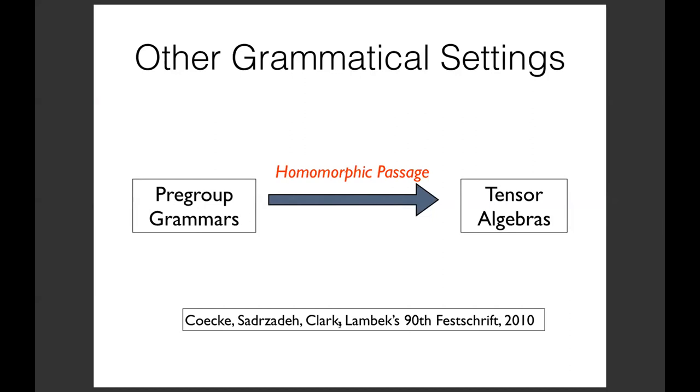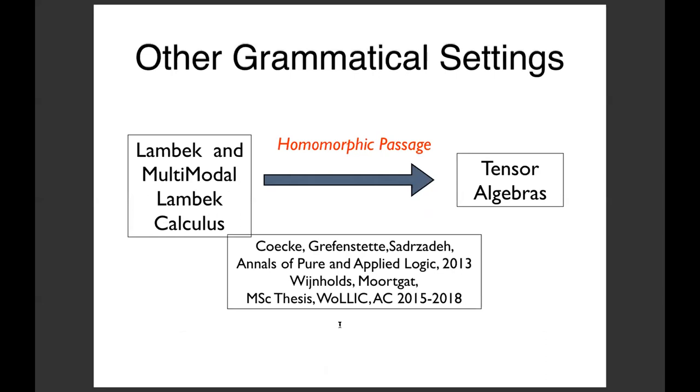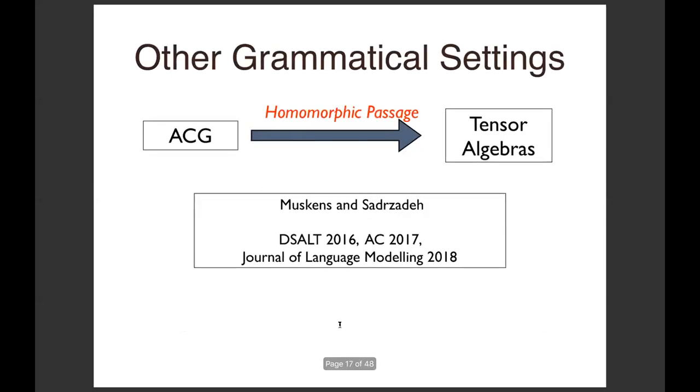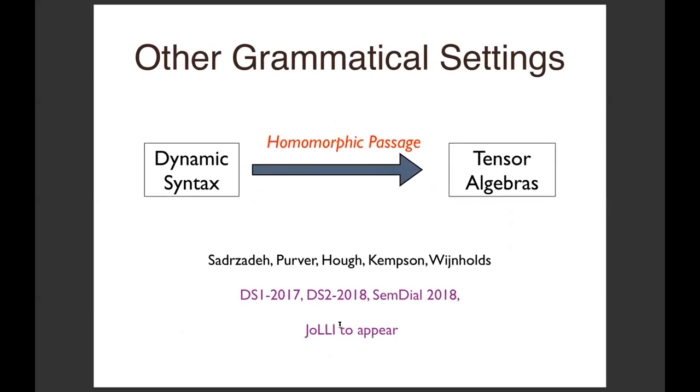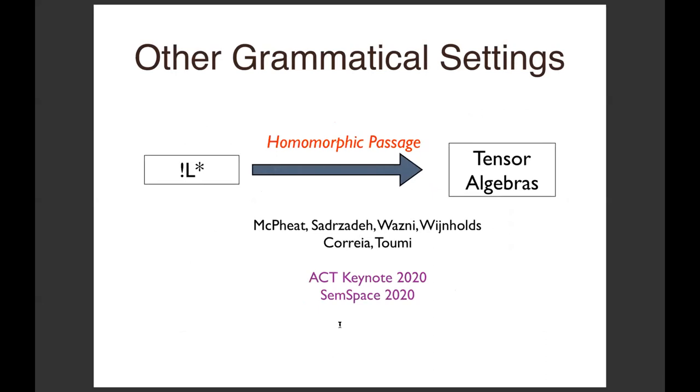Just as propaganda for us, you might want to say for what grammatical settings this homomorphic passage to tensor and vector algebras work. I would say it's invariant under any grammar. I would like to see how it works for fractal grammars of yesterday, but we've done it for pregroup grammars, easily extendable to Lambek calculus. Michael Moortgat and Krist Rainholds have extended it to multimodal Lambek calculus. It's been done for CCG. ACG was mentioned yesterday - with Reinhold Muskens we extended it to ACG. Dynamic syntax was mentioned yesterday - we've also extended it to dynamic syntax. The last edition is Lambek calculus with relevant modality.